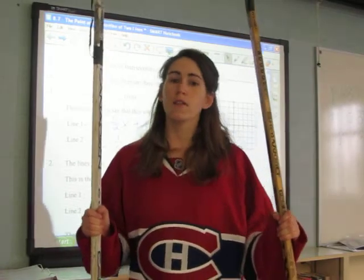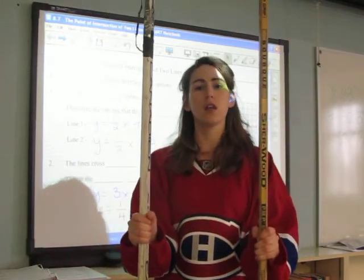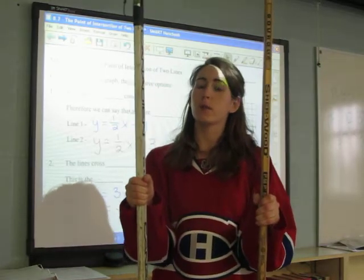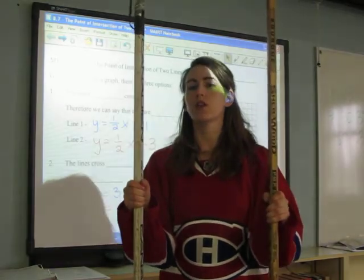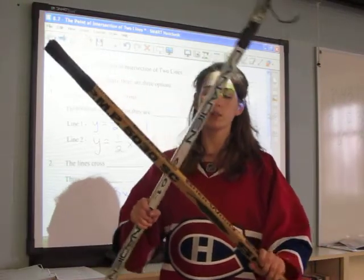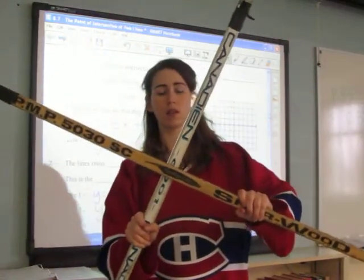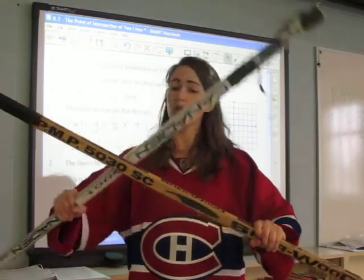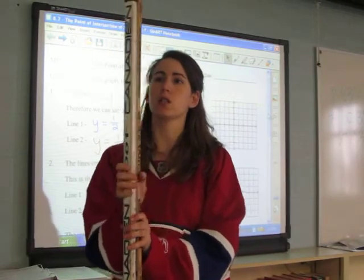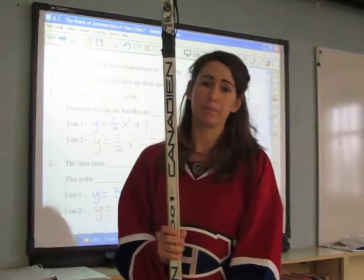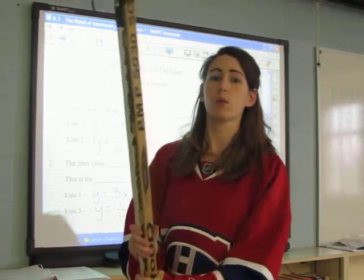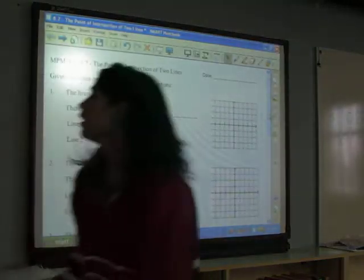Using a few hockey sticks to help with my illustration: the first option is that our lines never cross — this happens when our lines are always equally apart, meaning they are parallel. The second option is that our lines cross at exactly one point, which could happen anywhere. A special case is where our lines are perpendicular, meeting at 90 degrees, or it could just be at some other point. The third option is that our lines always cross, which happens when we have the exact same line.